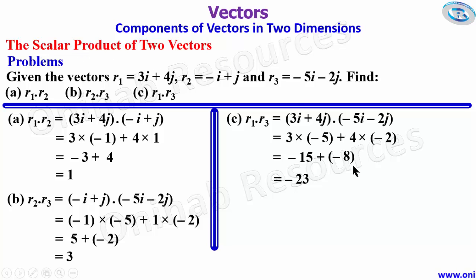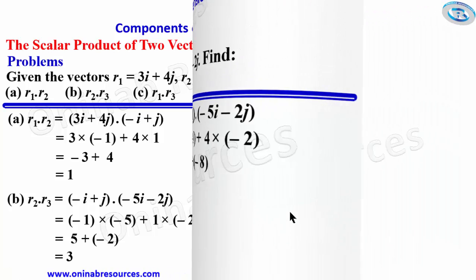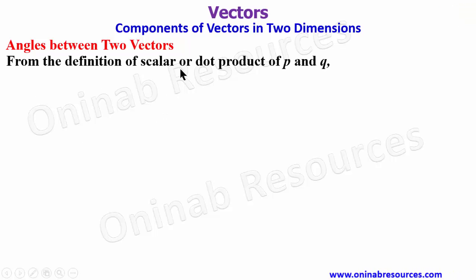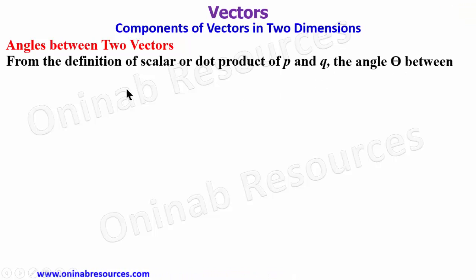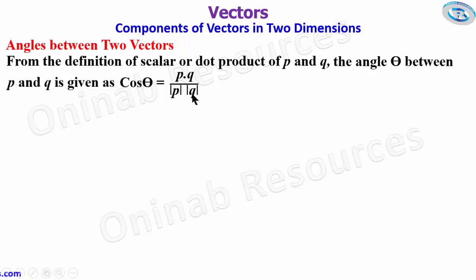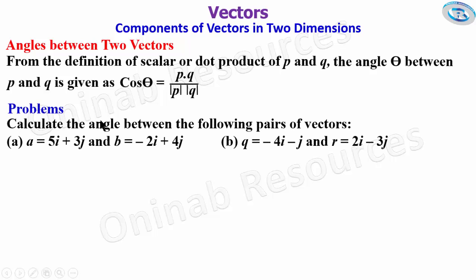We then go to angles between two vectors. From the definition of the scalar or dot product of P and Q, the angle θ between P and Q is given as cos θ = (P · Q) / (|P| × |Q|). We now solve some problems: calculate the angle between the following pairs of vectors.